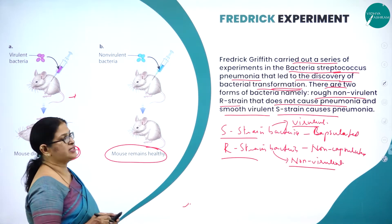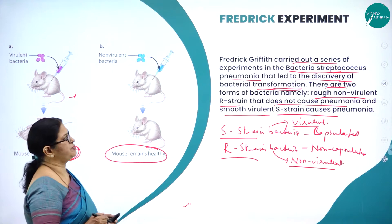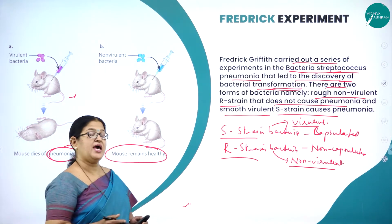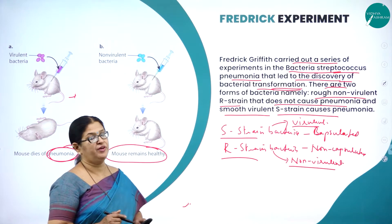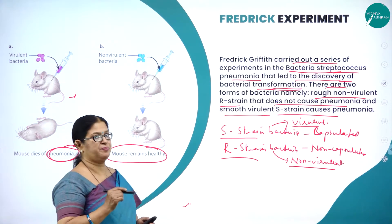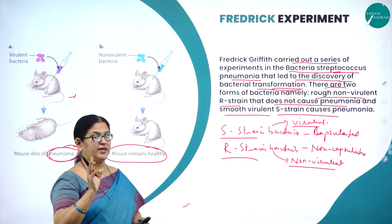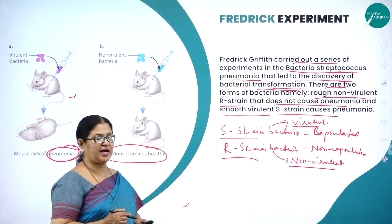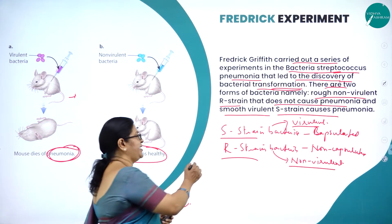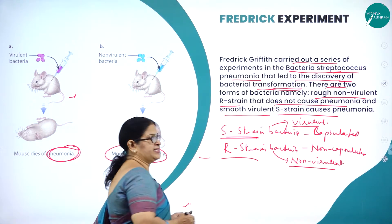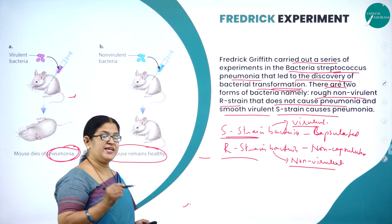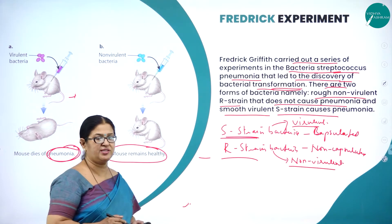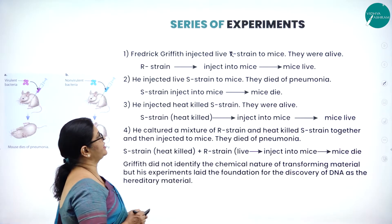Frederick Griffith carried out a series of experiments in the bacteria called Streptococcus pneumoniae, which led to the discovery of the transformation principle. He discovered two forms of bacteria: the non-virulent R-strain, which is non-disease-causing, and the virulent S-strain, which is disease-causing.